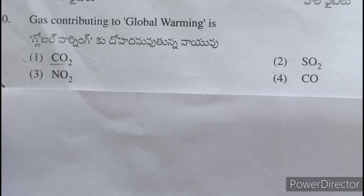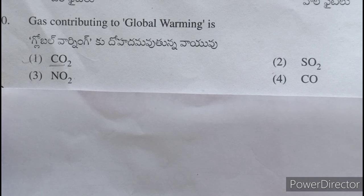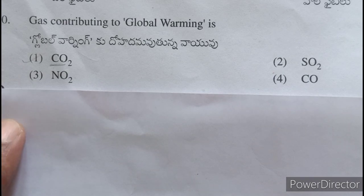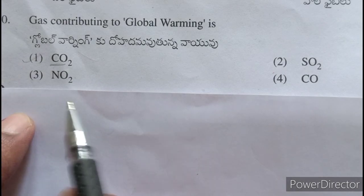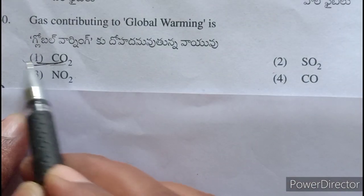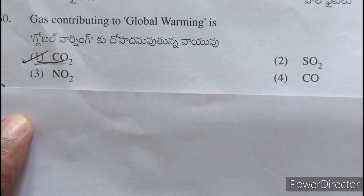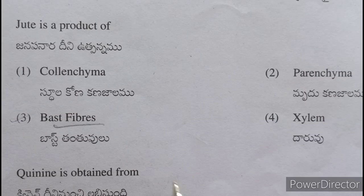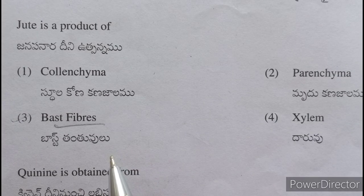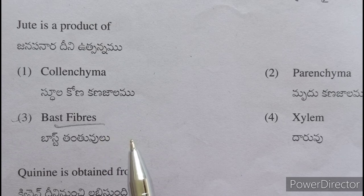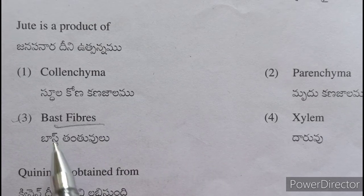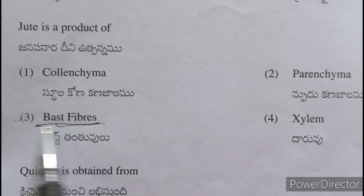Gas contributing to global warming — global warming kuu dohadam avutunna vayu — is CO2, carbon dioxide. Jute is a product of bast fibers — jenapanara yokka udhpannamu basht fibers.